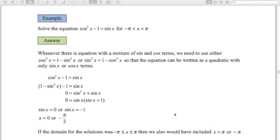So this example is a little bit trickier. We've got cos squared minus 1 equals sine x. So we've got a mixture of sine and cos terms here. So we're going to use our identity cos squared plus sine squared equals 1 to help solve this here.